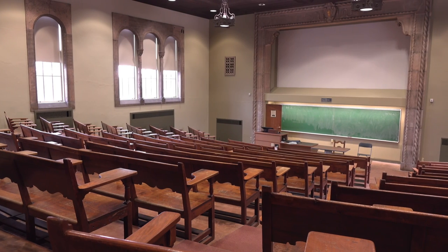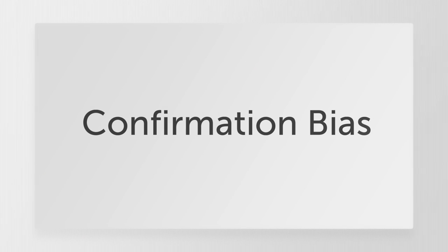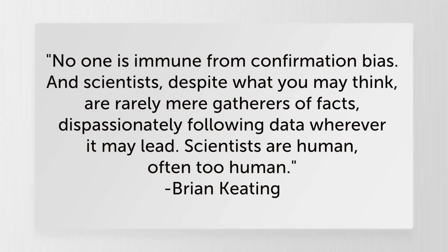A related example is from a professor of physics at the University of California. He discusses confirmation bias, where a scientist chooses observations, calculations, and conclusions that support his favorite ideas and minimizes other possibilities. He writes, no one is immune from confirmation bias. And scientists, despite what you may think, are rarely mere gatherers of facts, dispassionately following data wherever it may lead. No, scientists are human, often too human.